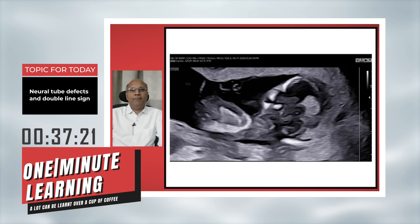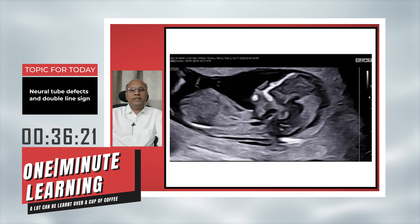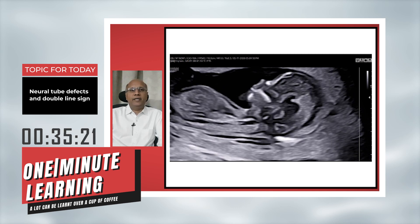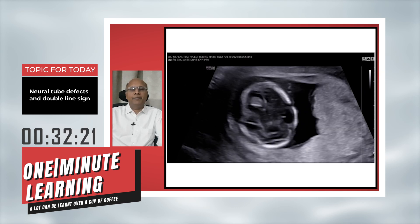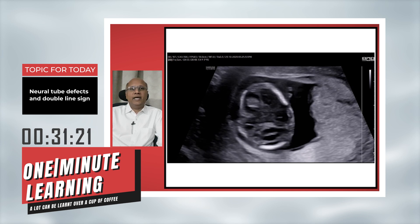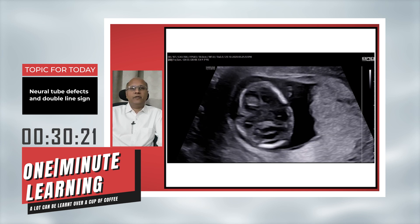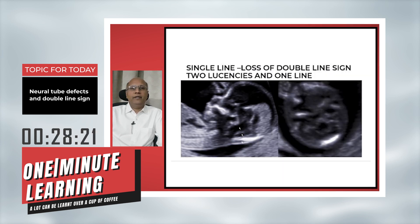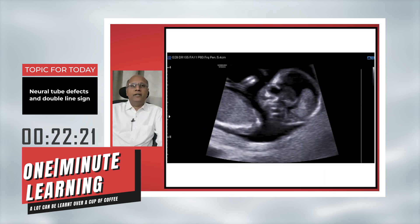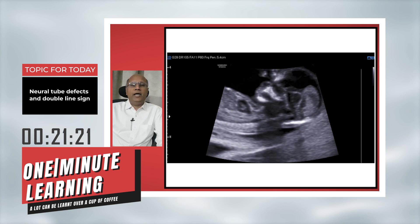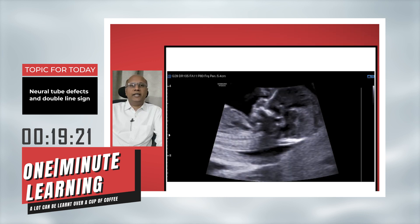Here is the axial picture of the brain showing the two-line sign. When the two lines are not present, we have loss of the two-line sign, or a single line sign, which is an indirect marker for neural tube defect.